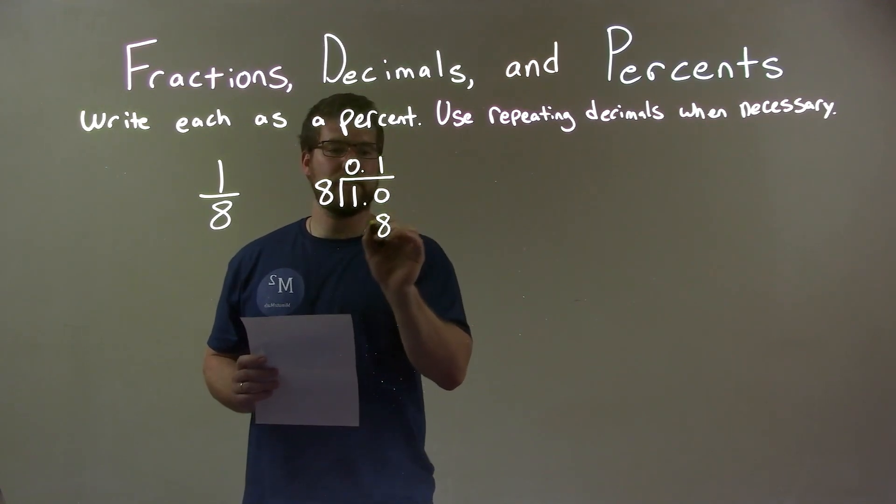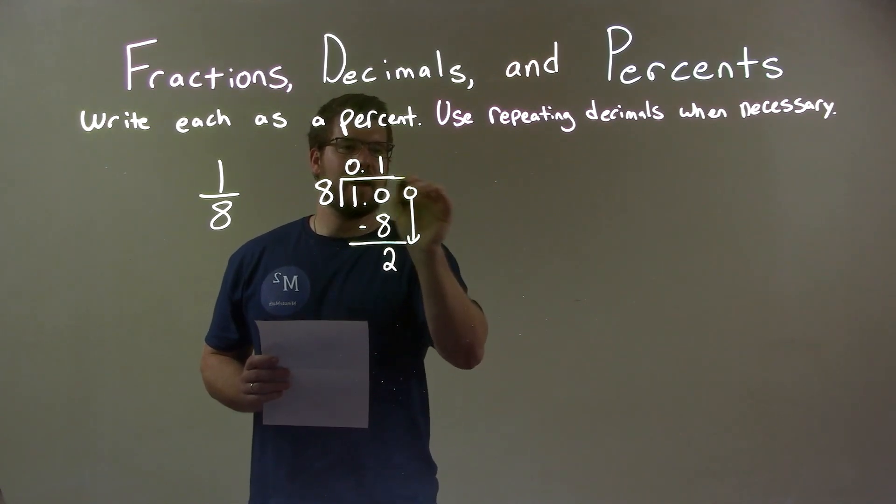1 times 8 is 8. Subtracted, 10 minus 8 is 2. We add another 0 and bring that down.